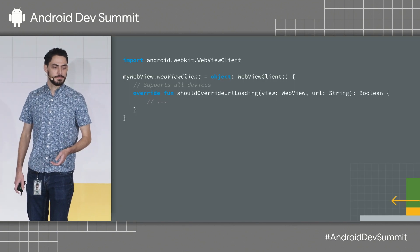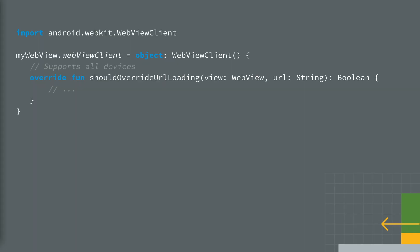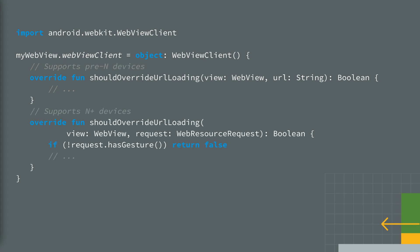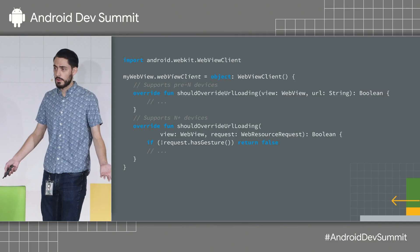Let's take a look at the code. Before Nougat, apps might override ShouldOverrideURLLoading and set a WebView client, dispatching intents in the body — this is the insecure version. Some better apps, when Nougat was released, would override the old implementation for pre-Nougat devices, and for new devices add a new implementation checking user gesture and not launching an intent without it. This seems great, but it only runs on a small number of devices — even today, only about 50%.